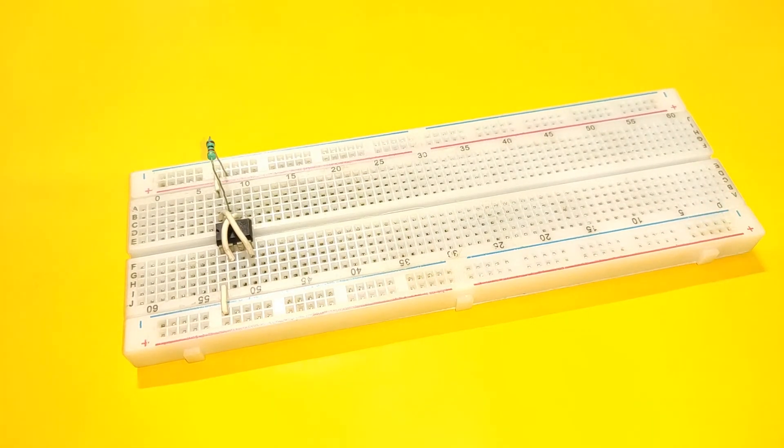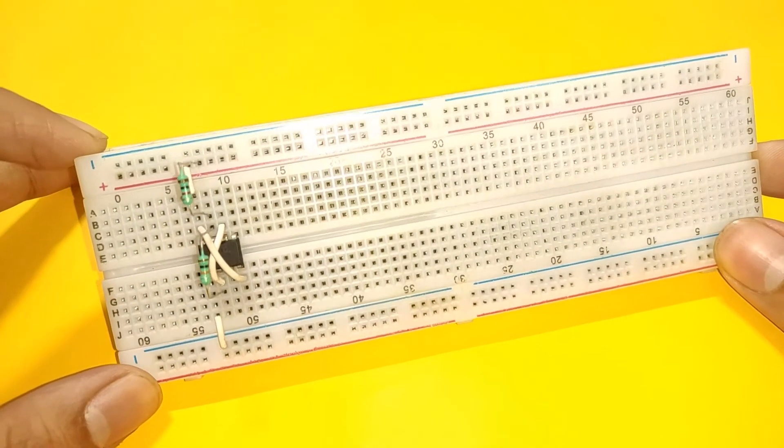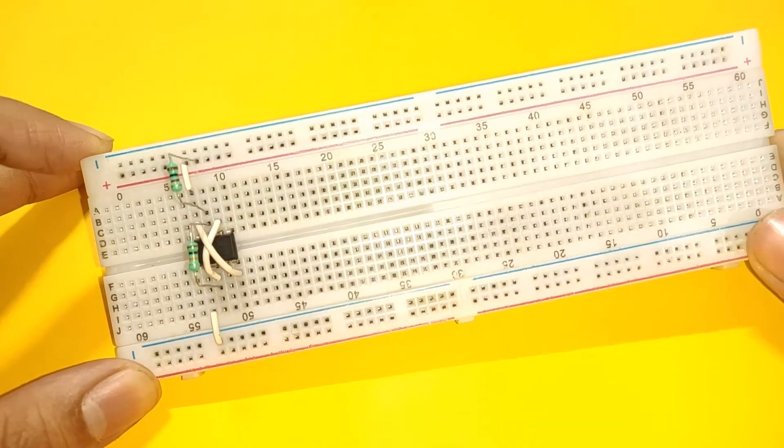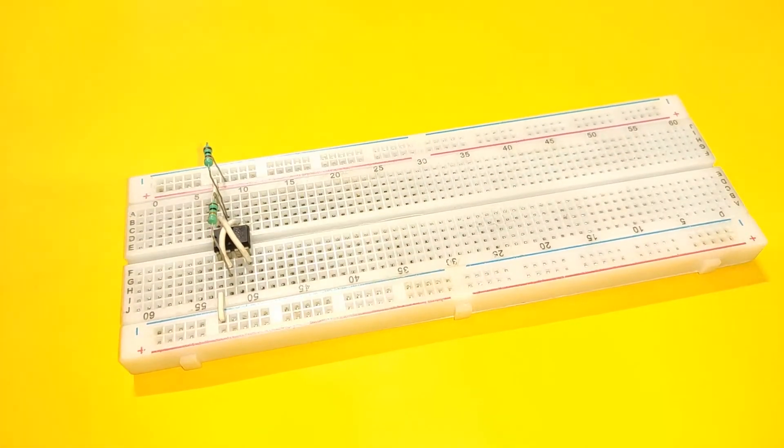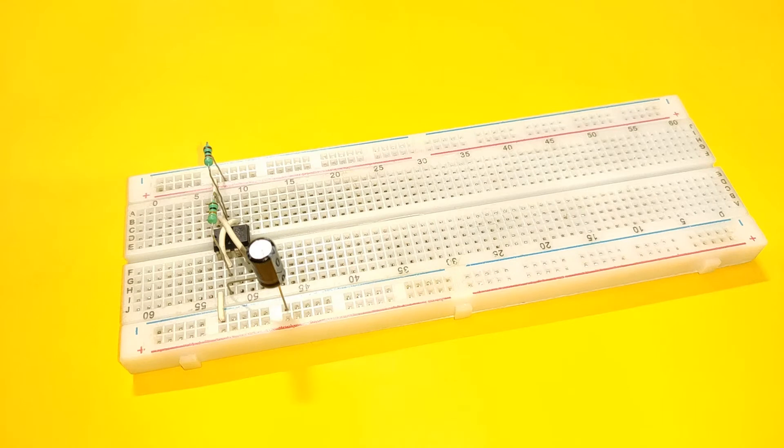Place a 1k resistor between pin 7 of the IC and positive power supply. Then connect a 10k resistor between pins 2 and 7. Now connect a 100 microfarad capacitor with positive lead connected to pin 2 of the IC and negative lead connected to ground.